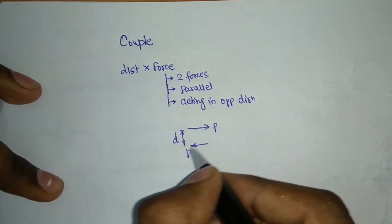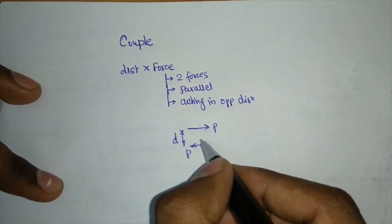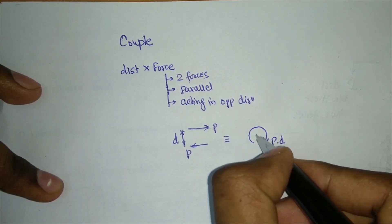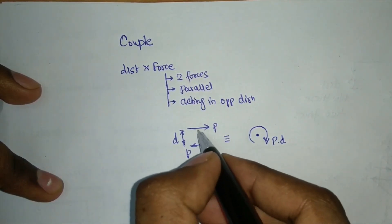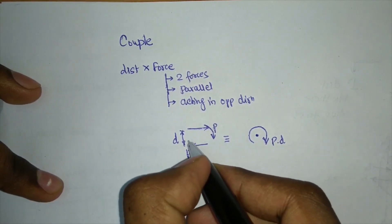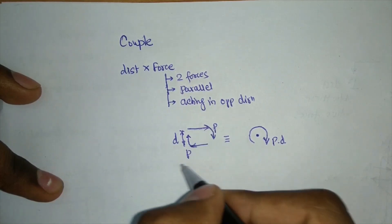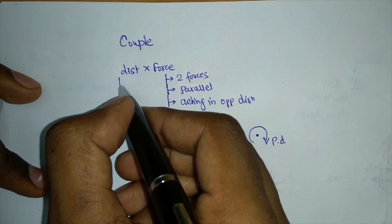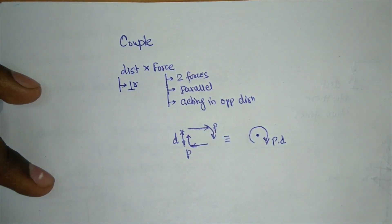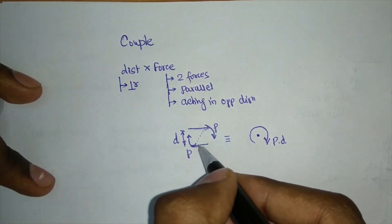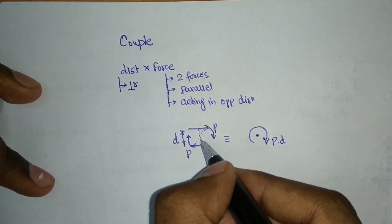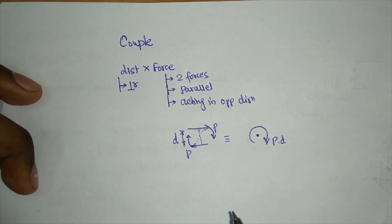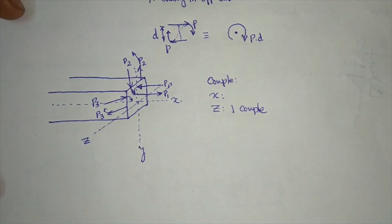The magnitude of the couple is P times D, and the distance used must be the perpendicular distance between the two forces — not an inclined distance. Now let us take an example to understand what different types of couples can be generated, as we see forces acting along different axes: x, y, and z.